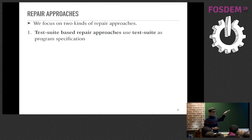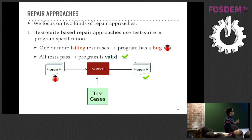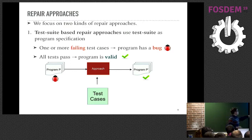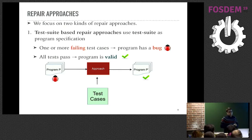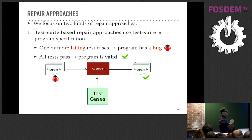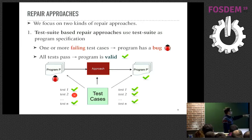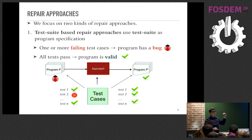The first kind of approach is test suite repair approaches, which use test cases as oracle or specification. If we have one failing test case, the program is buggy. If all test cases pass, the program is valid — valid with respect to the specification. The idea of this approach is to change the behavior of the program with the goal of passing all the test cases.